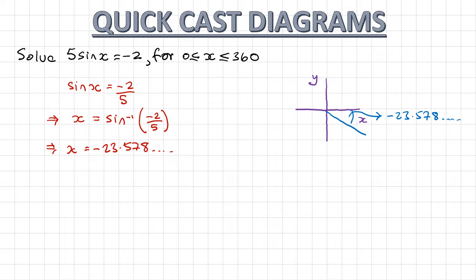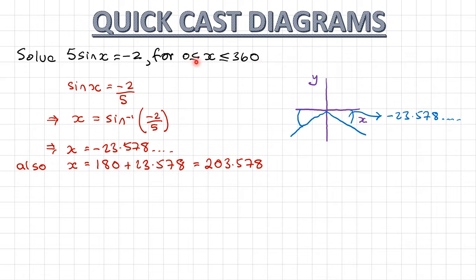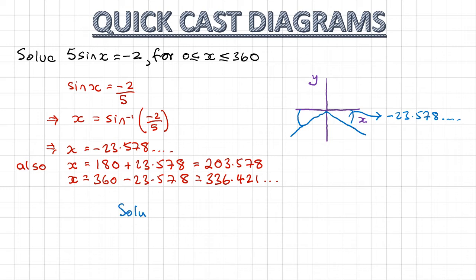That's going to be negative 23.578. And because I'm solving a trig equation for sine, I reflect this line in the y axis. So my other solution is going to be 180 plus 23.578. Now I need to note that I need to give an angle between 0 and 360, so I need to change this negative angle into a positive one. I can find that by doing 360 minus 23.578.